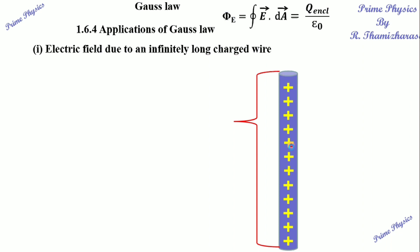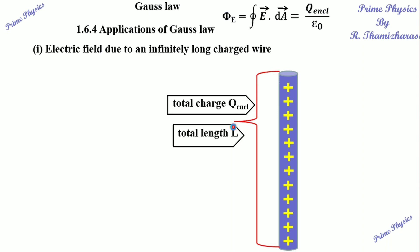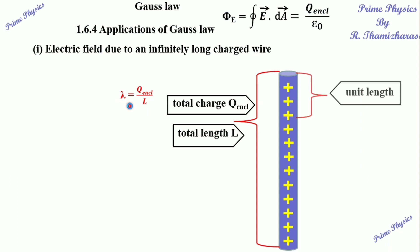This is an infinitely long charged wire. One part — that length is L. In this length, the charge enclosed, q enclosed. Lambda is linear charge density — this is one unit length. In this unit length, there is charge present over the unit length. It is called lambda — that is linear charge density.